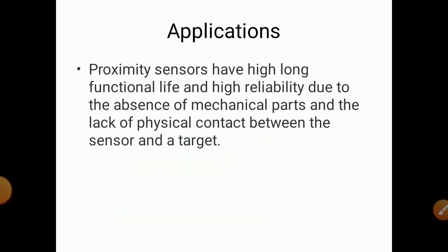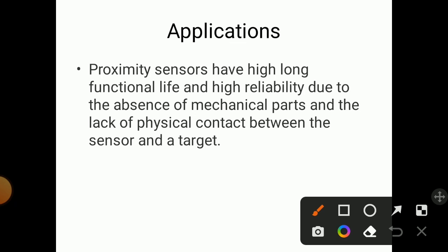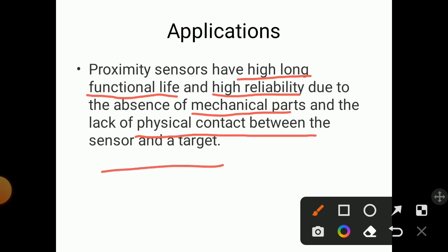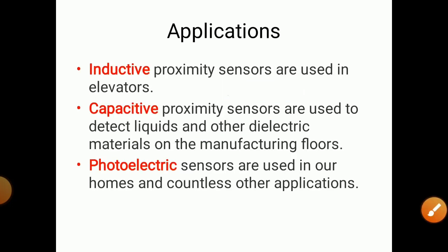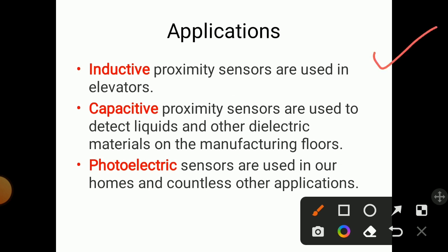Proximity sensors have a long functional life and high reliability due to the absence of mechanical parts and no physical contact between the sensor and target. Inductive proximity sensors are commonly used in elevators. Capacitive sensors are used to detect liquids and other dielectric materials on the manufacturing floor. Photoelectric sensors are used in homes and countless other applications.